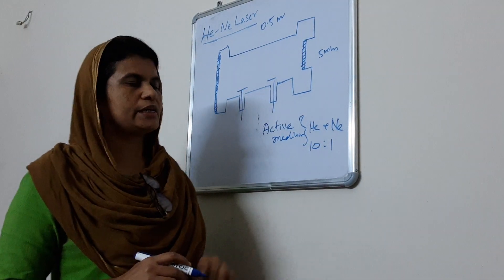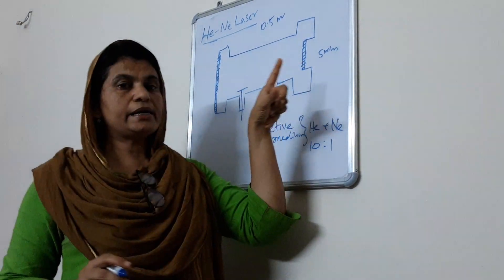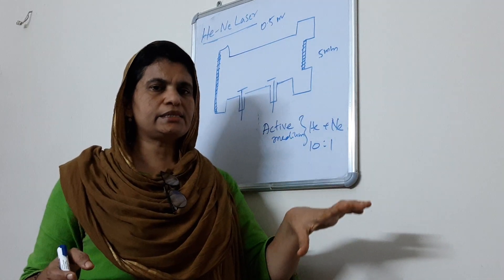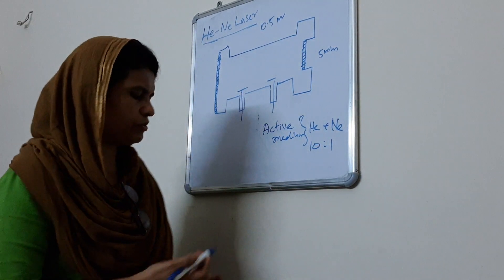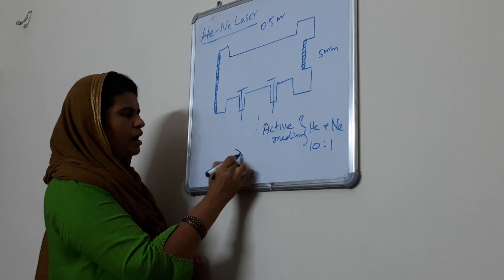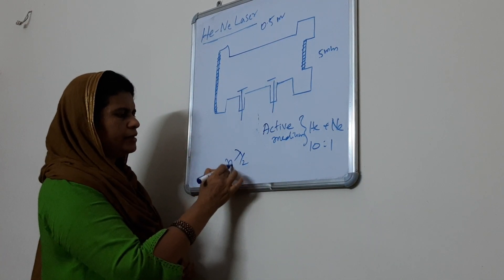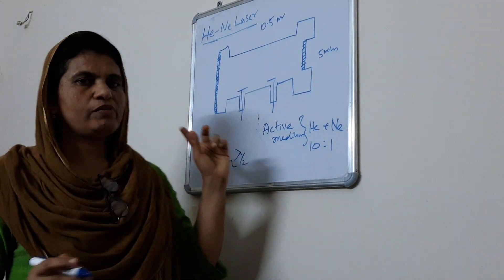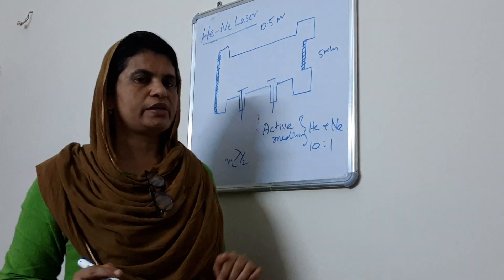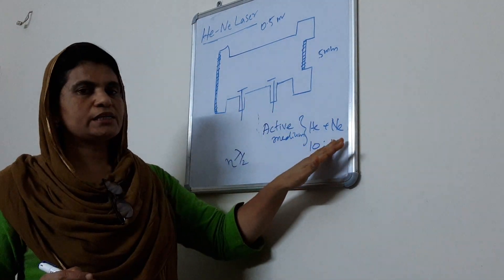Two mirrors. The distance is so adjusted that it is the multiple of half the wavelength. That is n times lambda by 2. Wavelength. This is the laser beam wavelength. Here is Neon laser wavelength.